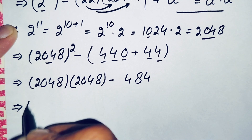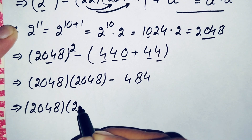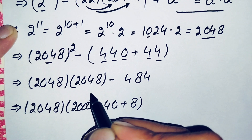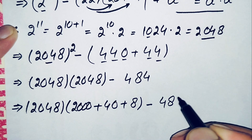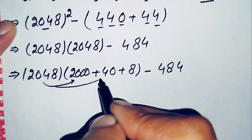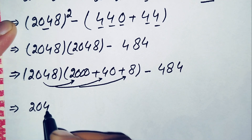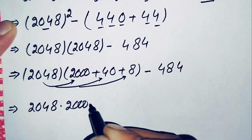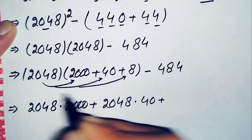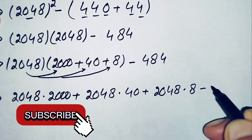To compute 2048 squared, we write 2048 times 2048. We break the second 2048 as the sum of 2000 plus 40 plus 8. So this becomes 2048 times 2000 plus 2048 times 40 plus 2048 times 8, minus 484.